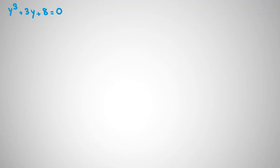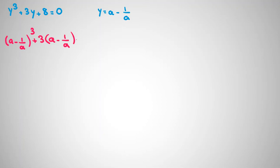To solve y cubed plus 3y plus 8 equal to 0, I use another change of variable and write y as a minus 1 over a. Substituting, we get a minus 1 over a cubed plus 3 times a minus 1 over a plus 8 equal to 0. Using the binomial expansion from before, the first part expands as a cubed minus 1 over a cubed plus 3 times a times 1 over a times 1 over a minus a.